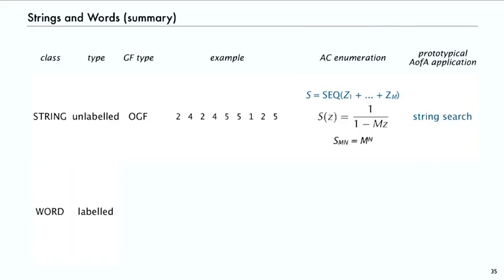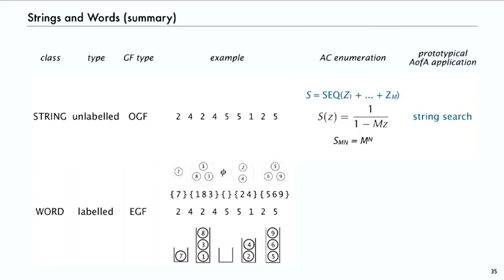Whereas a word uses labelled objects and exponential generating functions. It's sets of objects, but you could also write it as a string. The construction is a sequence of sets of objects, size M, and we get the same count. We use that to study hashing algorithms and more generally occupancy problems in combinatorics.